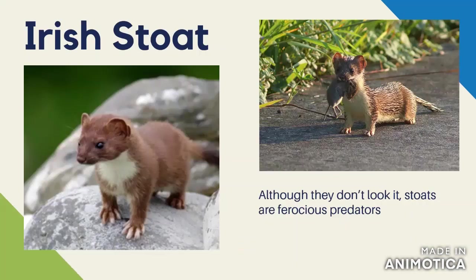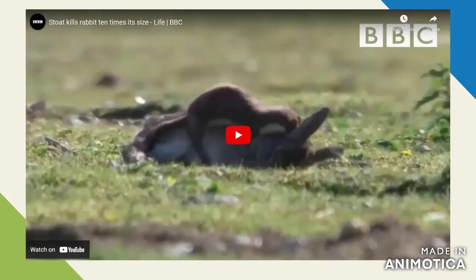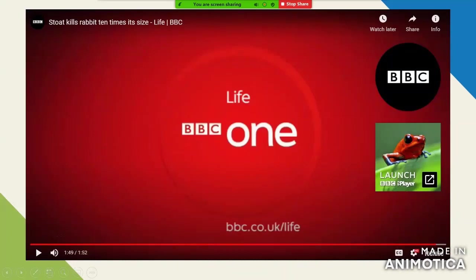The Irish stoat is a subspecies of the European stoat. Despite that very cute little appearance, they are ferocious predators — they will take prey many times their size and have a very varied diet, taking eggs from birds' nests, mice, garden birds, and large rabbits. This video from a David Attenborough documentary shows a stoat killing a rabbit ten times its size. So not so cute and cuddly — they are ferocious little predators.